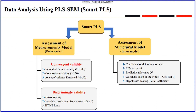I would like to divide data analysis using SmartPLS into two categories: number one is assessment of the measurement model, which is also known as the outer model, and number two is assessment of the structural model, which is also known as the inner model. For the measurement model we have to check six criteria — three for convergent validity and three for discriminant validity. To assess convergent validity: individual item reliability with a threshold value greater than 0.708, composite reliability greater than 0.70, and average variance extracted greater than 0.50.